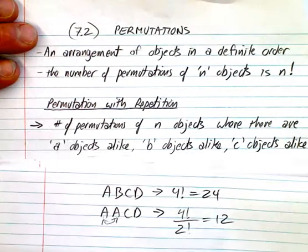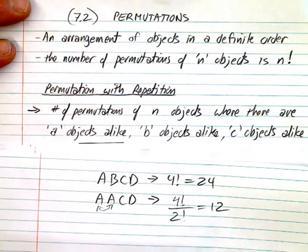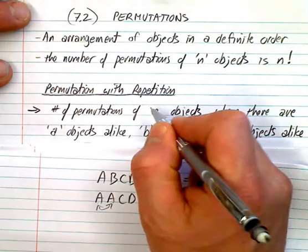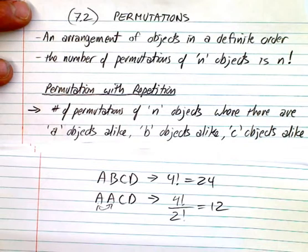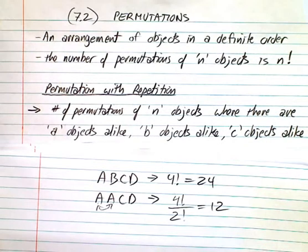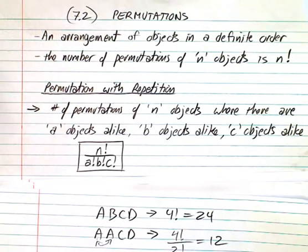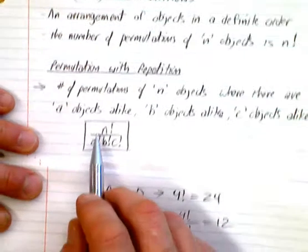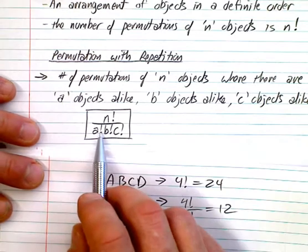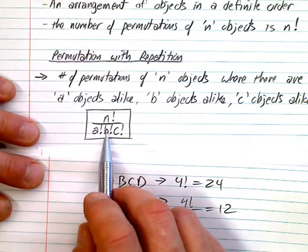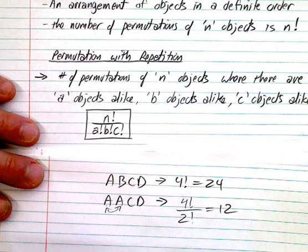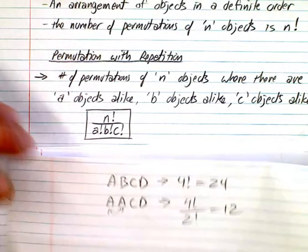So the number of permutations of n objects, where there are 'a' objects alike, 'b' objects alike, and 'c' objects alike, is n factorial divided by a factorial times b factorial times c factorial — accounting for however many of each type are the same.